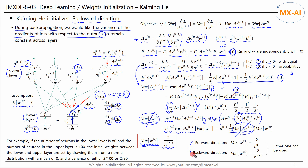We found two optimal variances for W: one for forward propagation and one for backward propagation. If the number of neurons in the lower and upper layers are equal, the two variances are equal; otherwise they differ. Xavier Glorot used an average of the two, but Kaiming He said that using either one would suffice. For example, if the lower layer has 80 neurons and the upper layer has 100 neurons, the initial weights are drawn from a normal distribution with mean 0 and variance of either 0.02 or 0.025.